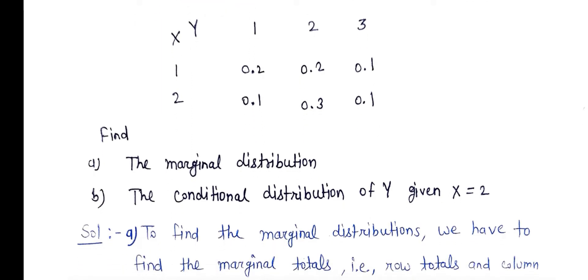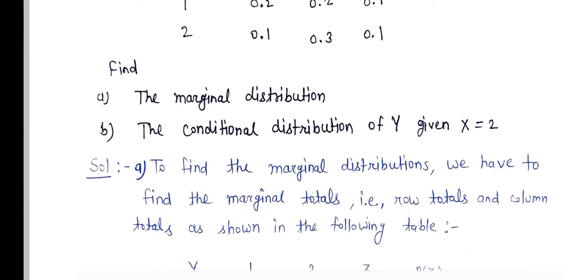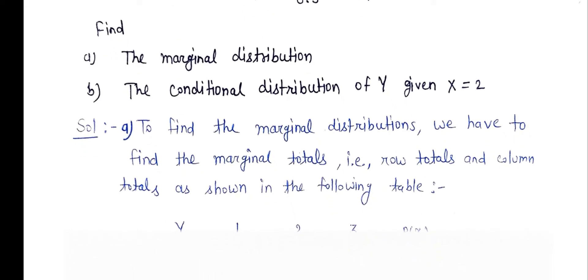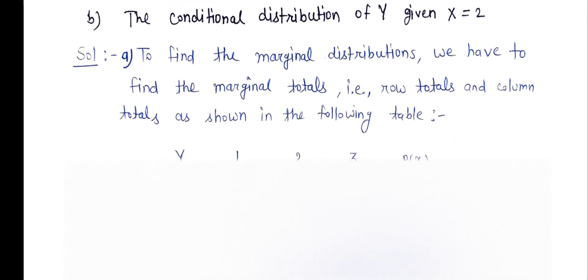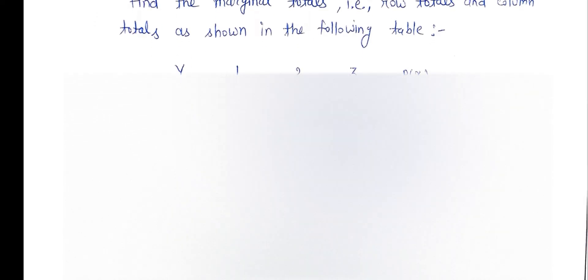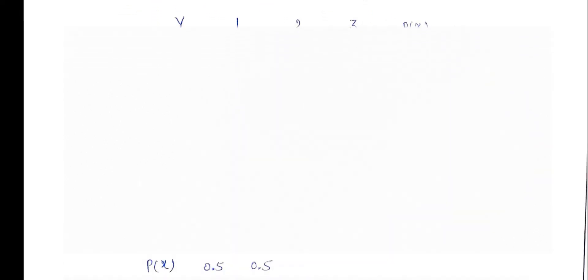Now, how to find the marginal distribution? Solution is here. First of all, to find the marginal distributions, we have to find marginal totals, row totals and column totals as shown in the following table. So, first of all, we have to find the totals, which is the horizontal and vertical totals, which is actually given here.